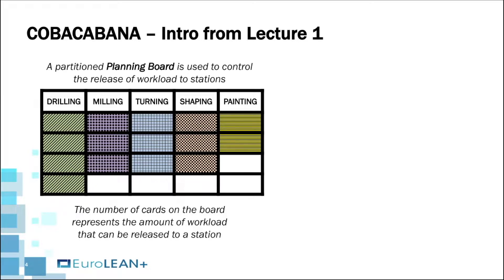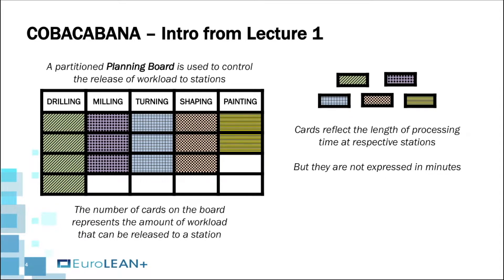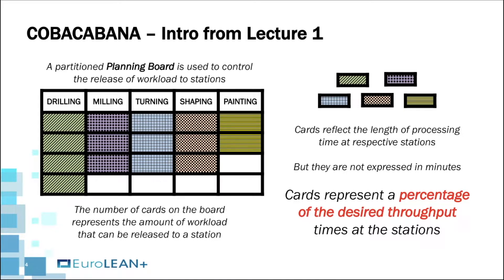Each card represents a fixed amount of time — for example, 5 minutes — and for an order to be released into the system, it must obtain the number of cards equivalent to its required processing time at the station. While the cards required by an order reflect the length of its processing time at the respective workstation, the cards are not expressed in minutes. Instead, the total number of cards on the board for a workstation represents 100% of the maximum throughput time desired at that workstation.